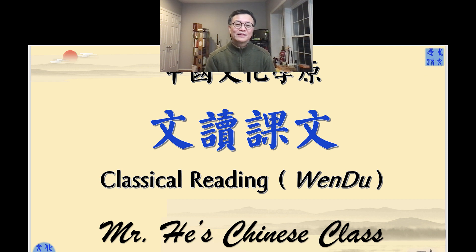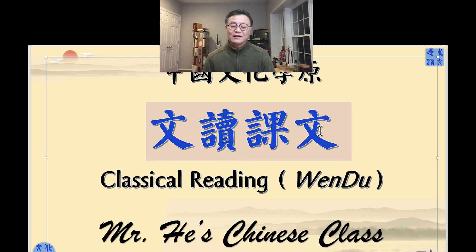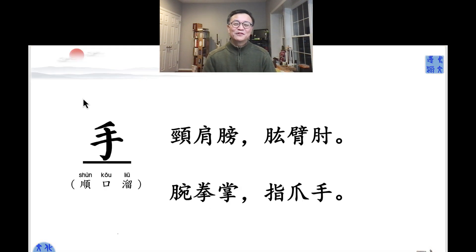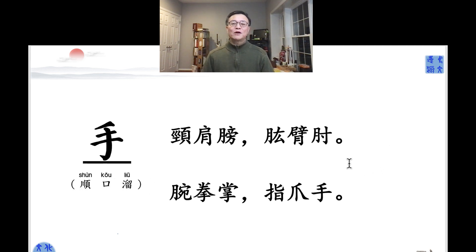First of all, 我们复习一下字、词和句子从我们学过的课文。Text, 课文 — it's right over here. 来读课文。If you still remember, we have the ballad — 顺口溜. This is for the 顺口溜, just to help you remember all the parts of your body. 手，手 — hand. I'll go over it one more time, then we'll read it in the classic way to make it easier to remember.